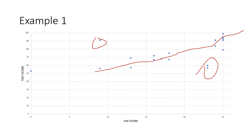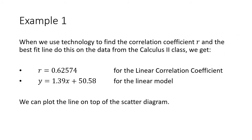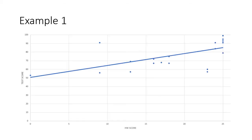Using technology, I found that the value for r was 0.62574, and I was even able to find the linear model: y = 1.39x + 50.58. So now I could plot that line on top of my scatter diagram.